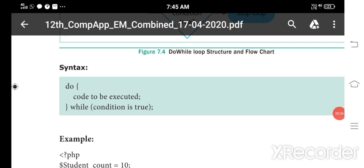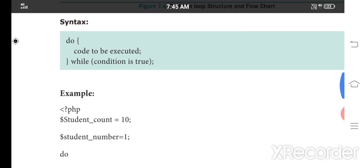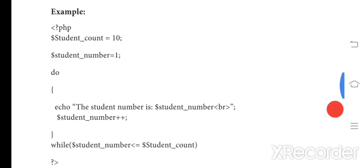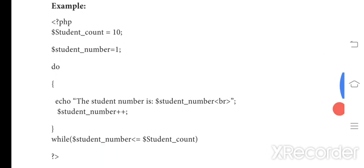The syntax for the do-while loop is: first write the keyword do, then the code to be executed inside braces, and at the exit point write while with the condition. So we write do, execute the code, and at the end check the condition.